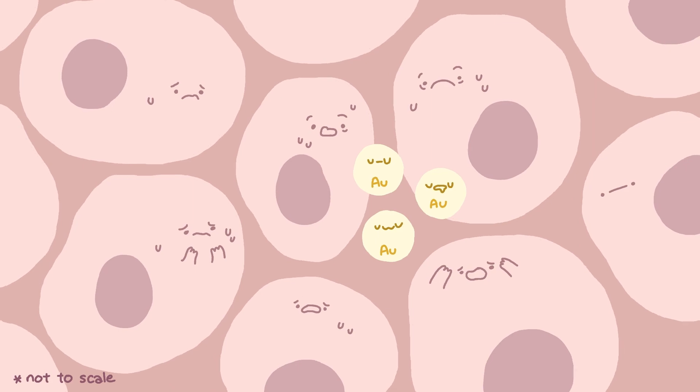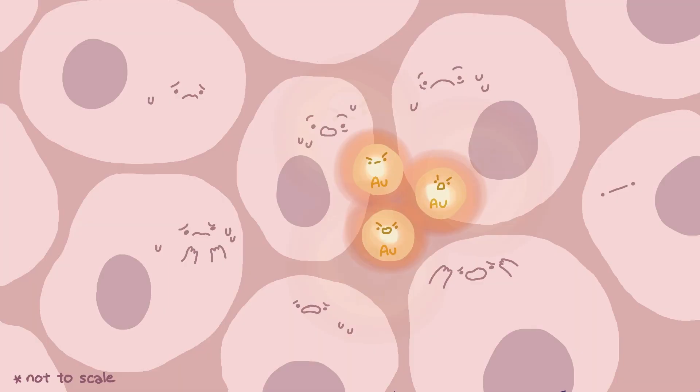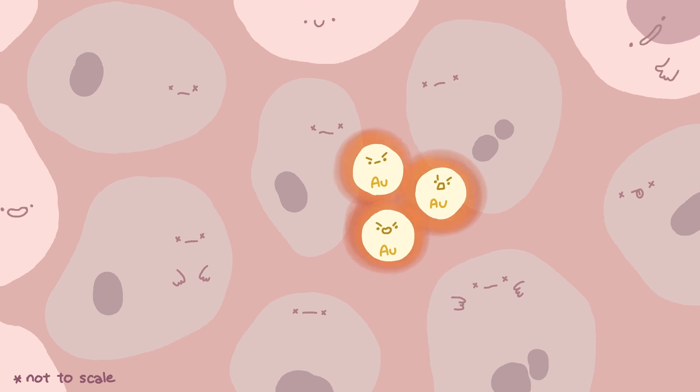One application is using gold nanoparticles to treat cancer. When stimulated by red light, the amplified electric field releases heat in a localized area, killing cancer cells without damaging nearby body cells. And that's how tiny particles can pack a big punch.